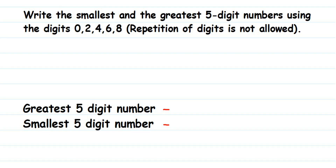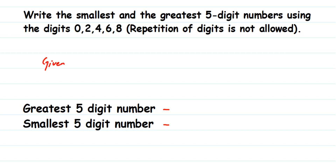Here we have to form digits using the given digits. The question is: write the smallest and the greatest five-digit number using the digits 2, 0, 4, 6, 8. Repetition of digits is not allowed, so we should not repeat the digits. They have given five digits here.